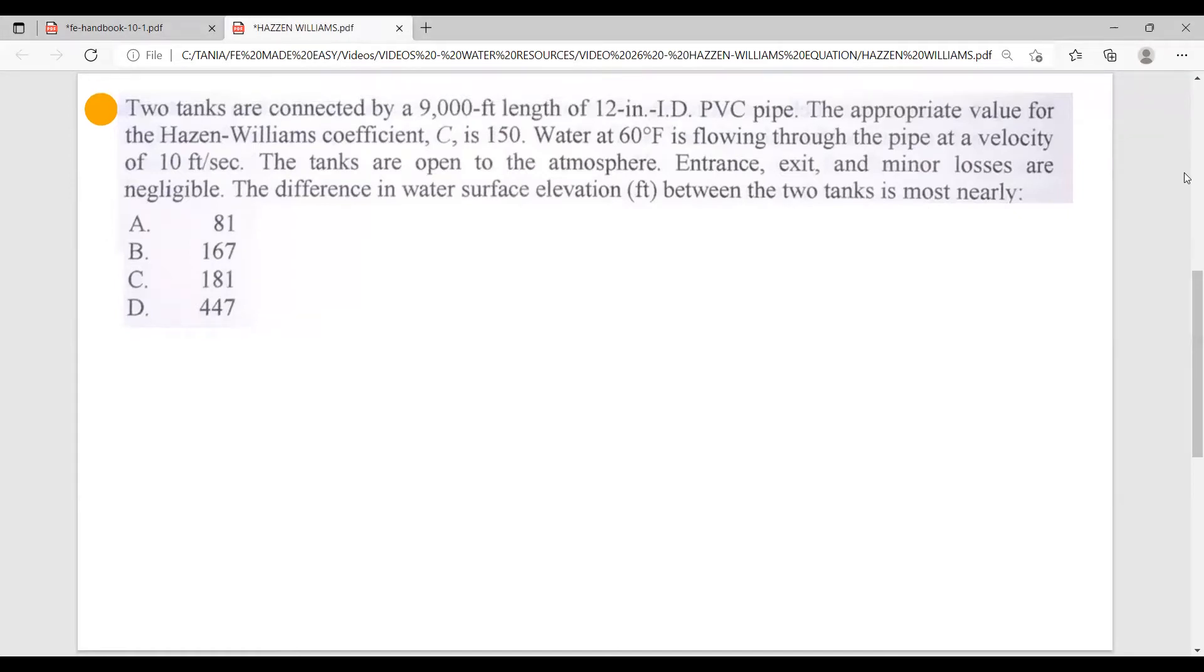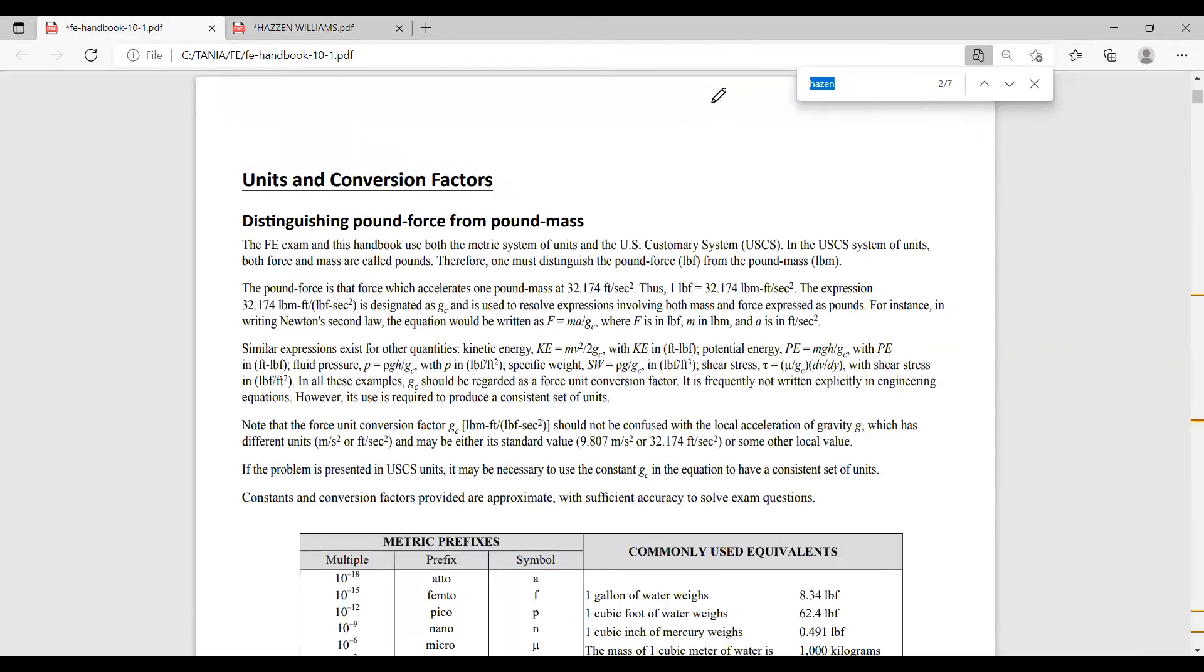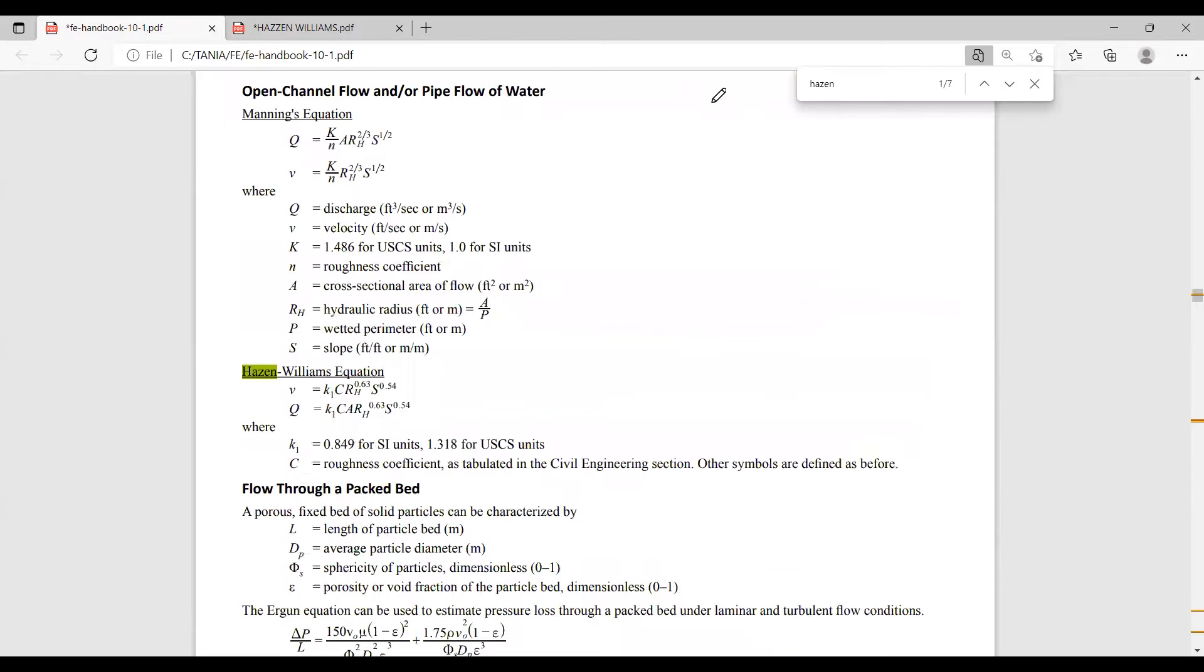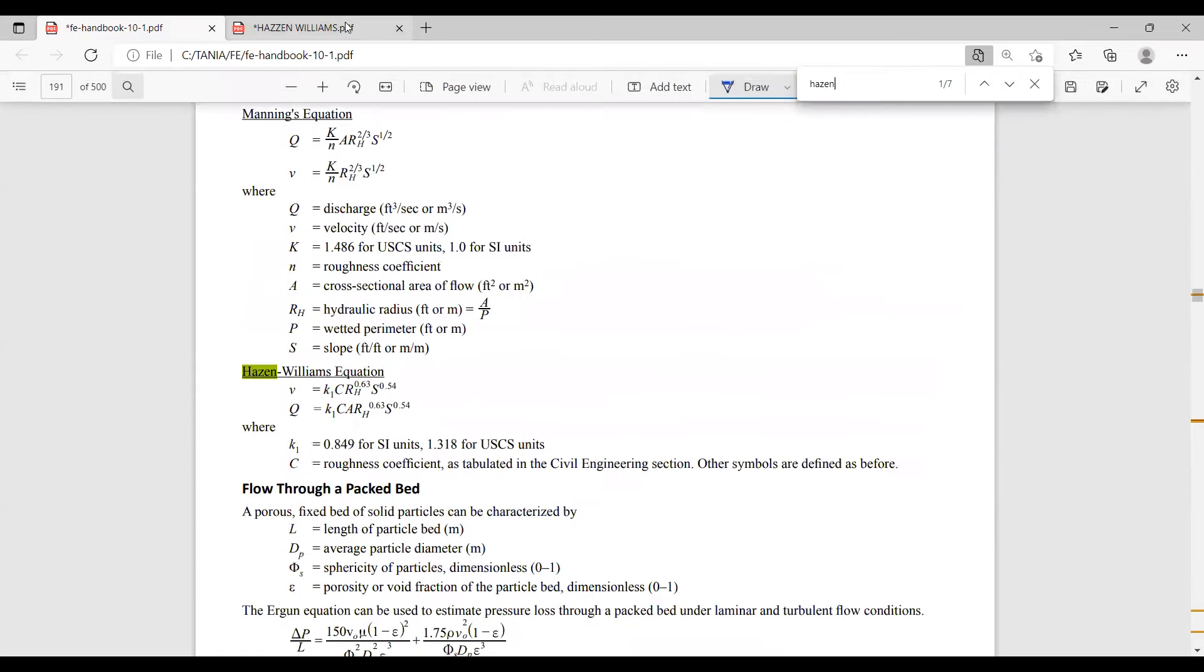As the problem states, we have Hayes and William coefficient. Let's go ahead and look for the Hayes and William equation in the FE handbook. All you have to do is just go here and type Hayes and William or just Hayes and you will be redirected to the formula. This is the formula for the velocity and this is the formula for the flow. We are given the velocity at 10 feet per second, so I guess we should be using the formula for the velocity.